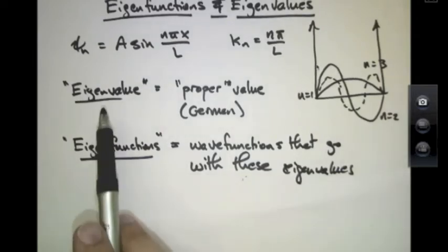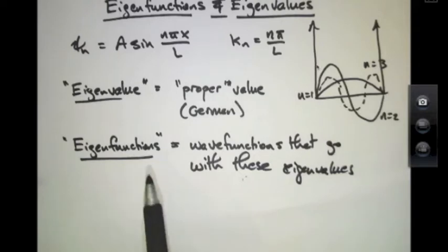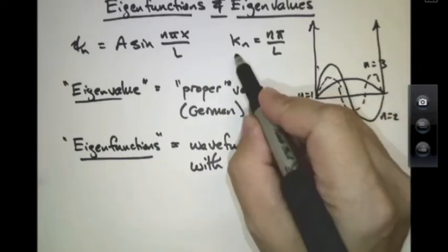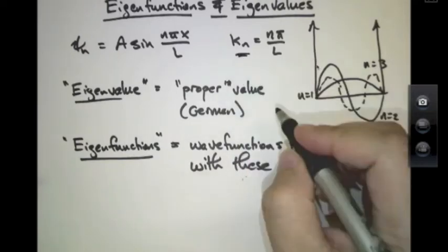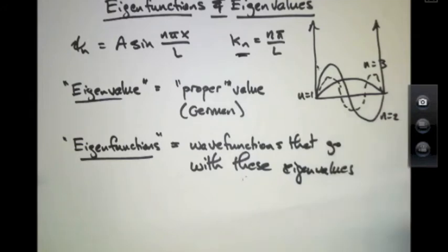So for every eigenvalue or proper values for the allowed k_n's or the corresponding allowed energy eigenvalues, there is an eigenfunction or wavefunction that is the unique wavefunction that will have that eigenvalue.